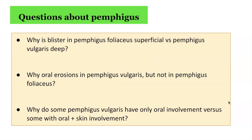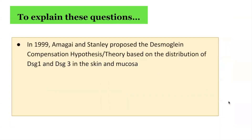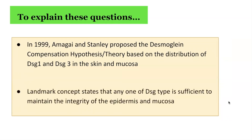To address these questions, in 1999, Drs. Amagai and Stanley proposed the Desmoglein compensation hypothesis theory based on the distribution of Desmoglein 1 and Desmoglein 3 in the skin and mucosa. This concept has become the landmark concept to explain these questions, and it states that any one of the Desmoglein types is sufficient to maintain the integrity of the epidermis and mucosa.